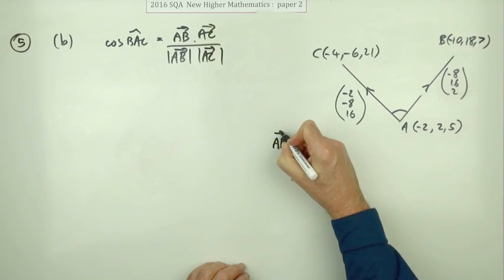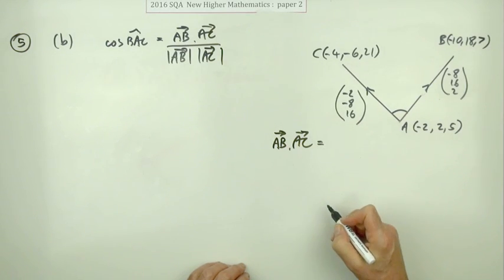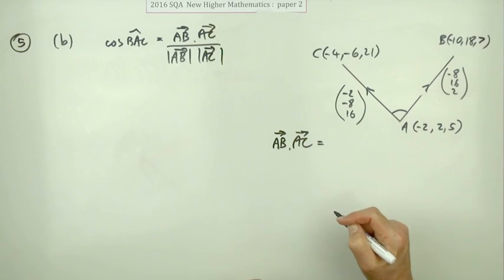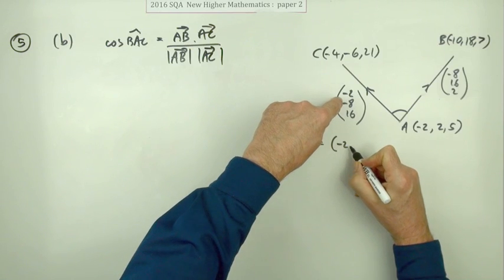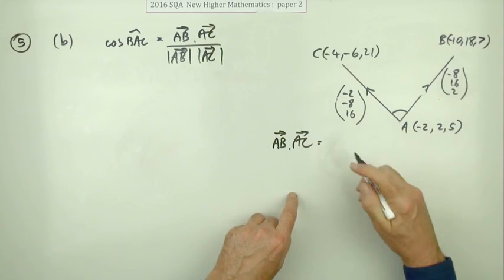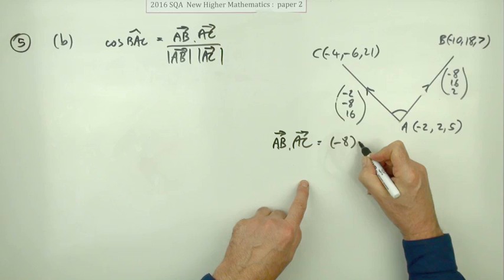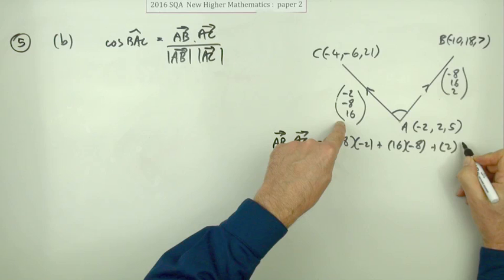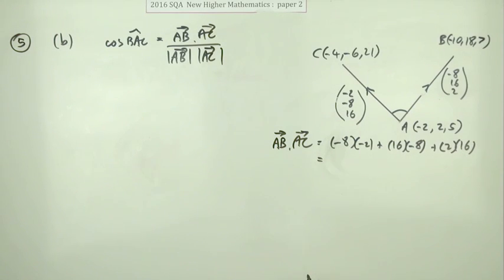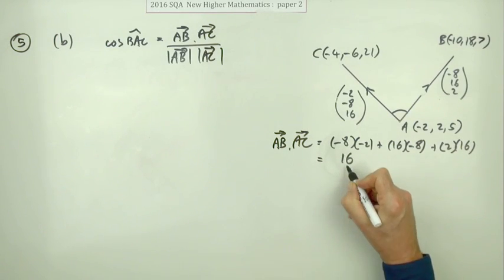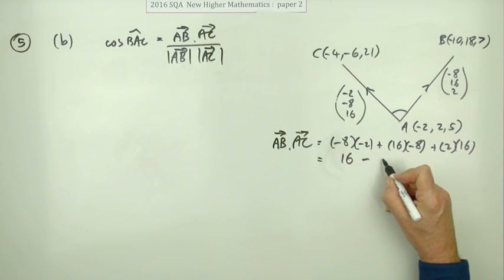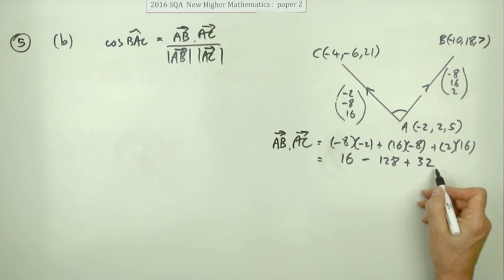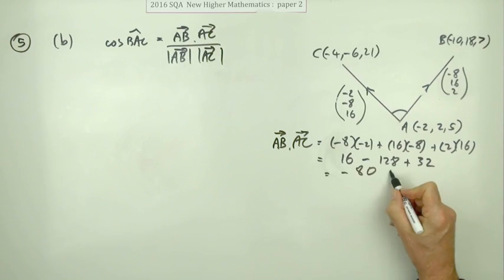So what is the scalar product? What is AB dot AC? It takes a bit more writing to do that. Well, that would just be multiply the corresponding components and add them up to get a scalar, a single number. So that'll be negative eight times negative two plus 16 times negative eight plus two times 16. Just putting them all in little insertion brackets. So that's 16, but take away 128, and then add 32. So that's 48 away is negative 80. That's worth a mark.